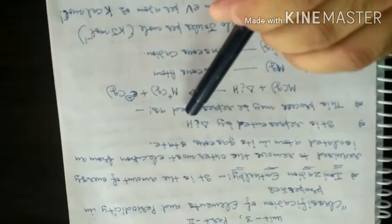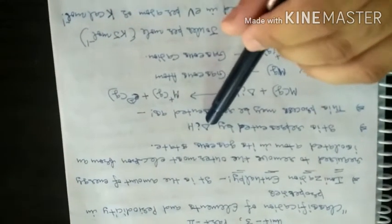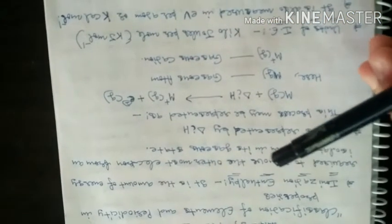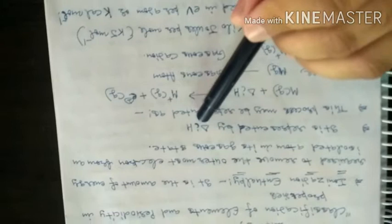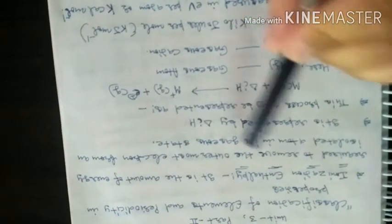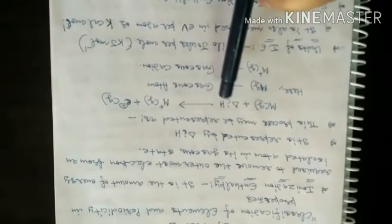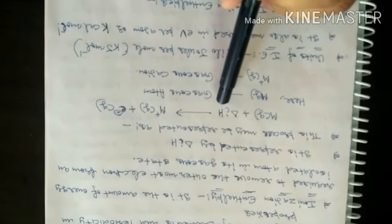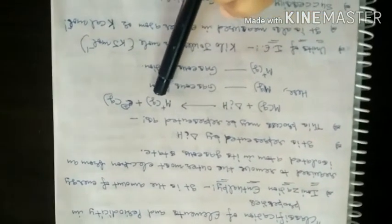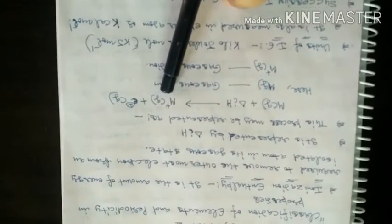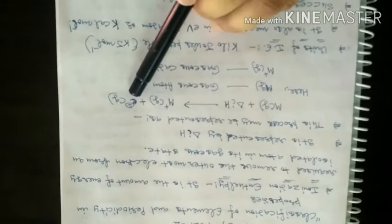This is called ionization enthalpy, represented as delta I H. For a metal in gaseous form, when a minimum amount of energy is supplied, it loses a single electron to form a cation.